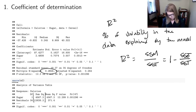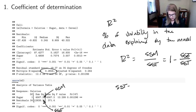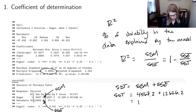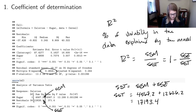The ANOVA table has a column labeled sums of squares. The top value is the SSM, the sum of squares for the model, and the bottom is the SSE. Since SST equals SSM plus SSE, I can figure out SST: SSM is 4567.2, SSE is 12626.2, so SST is 17193.4.